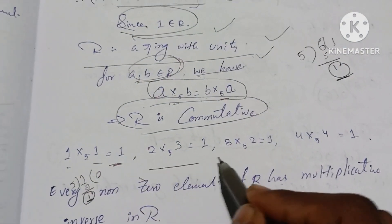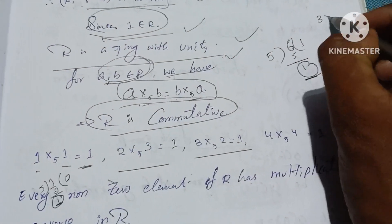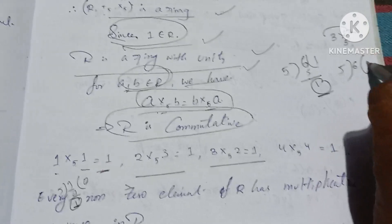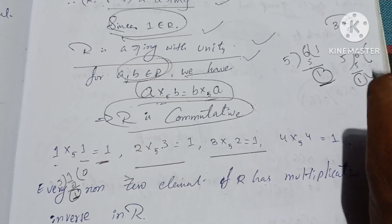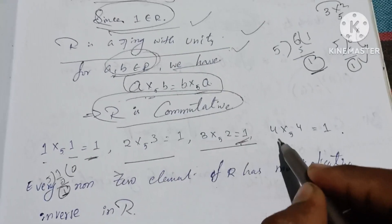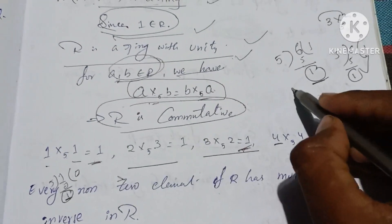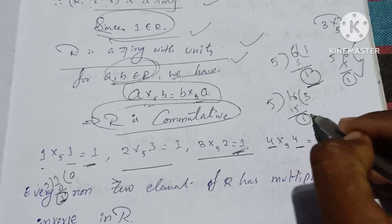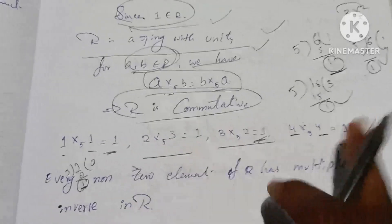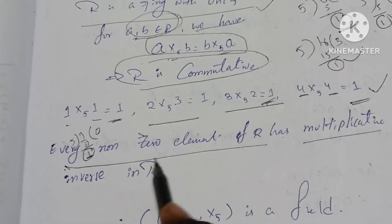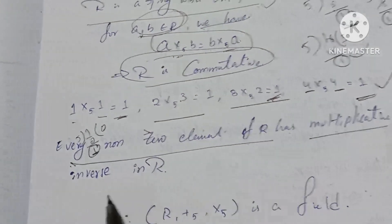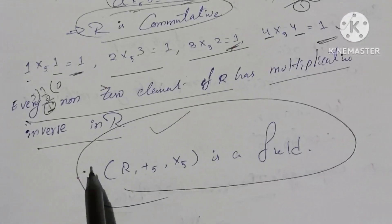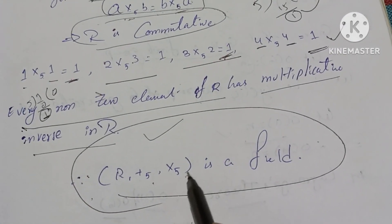Next, 3 ×5 4 equals 12; 5 into 12 gives 10, then 15, remaining 1 — so remainder 1. Therefore, every nonzero element of R has a multiplicative inverse in R. Therefore R is a field. Therefore, (R, +5, ×5) is a field.